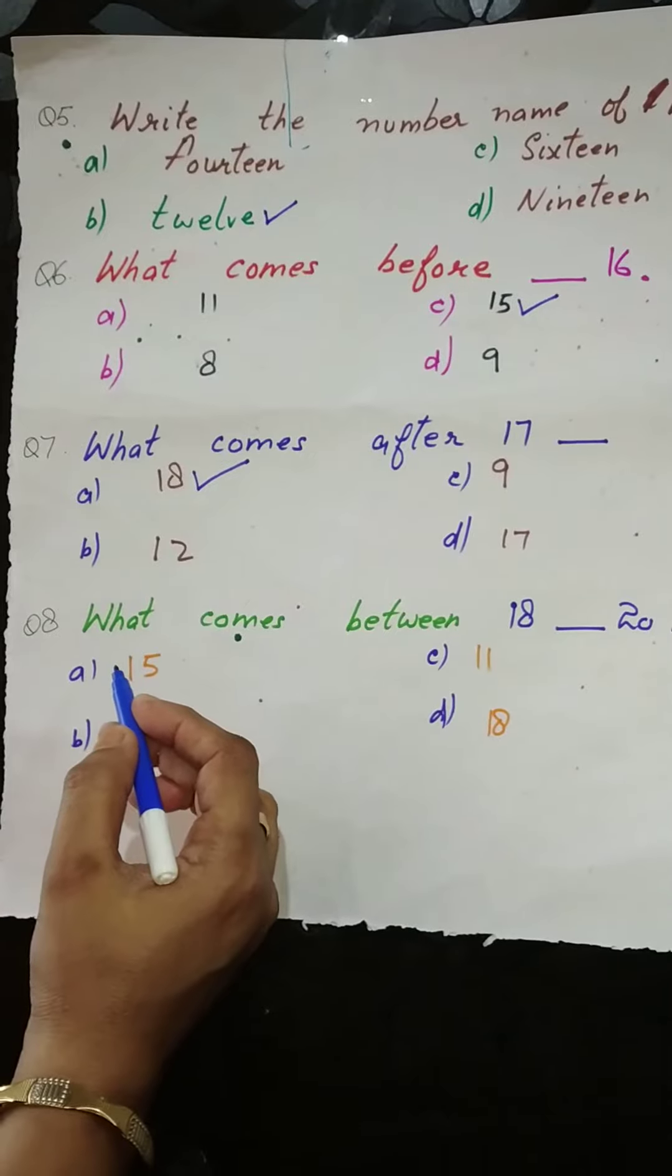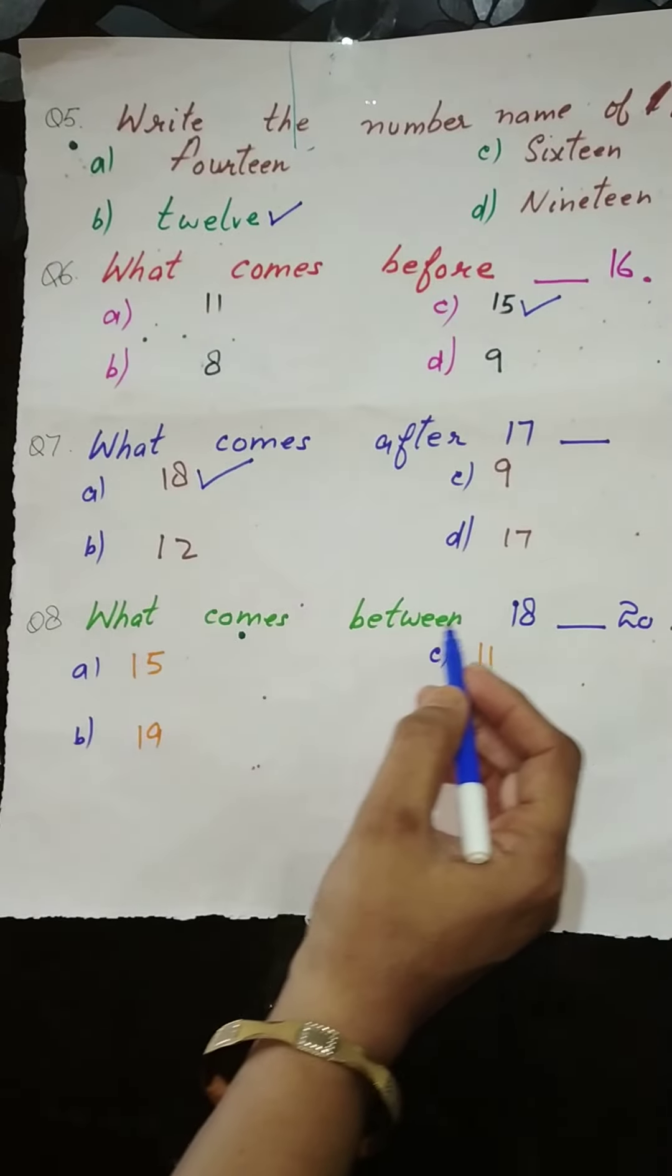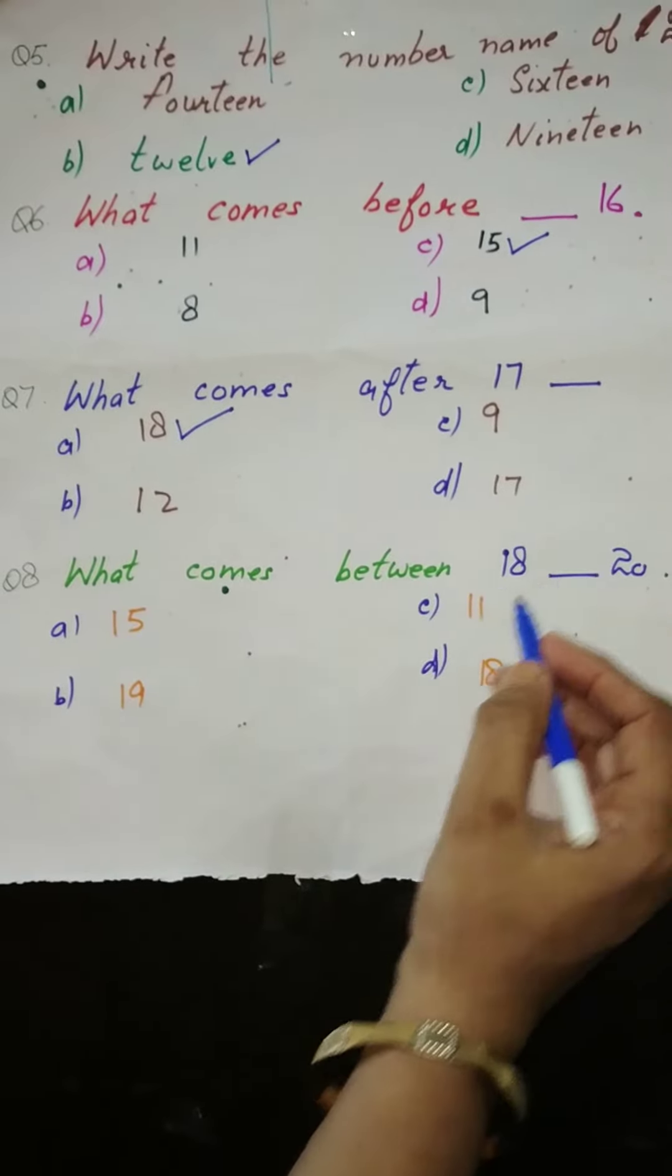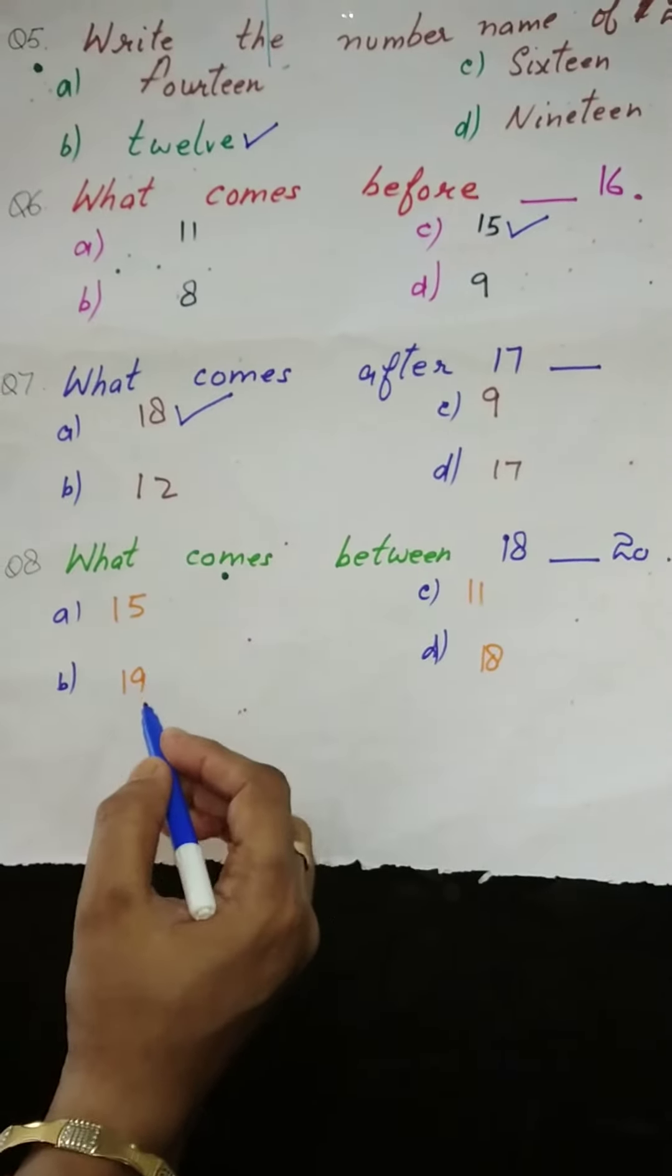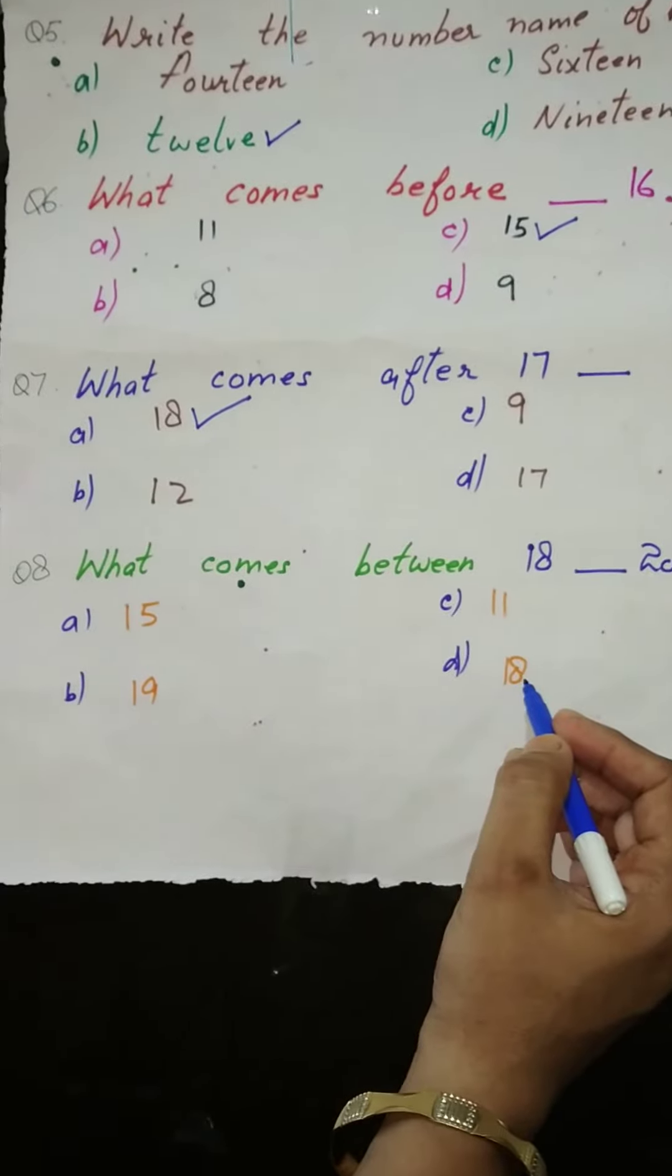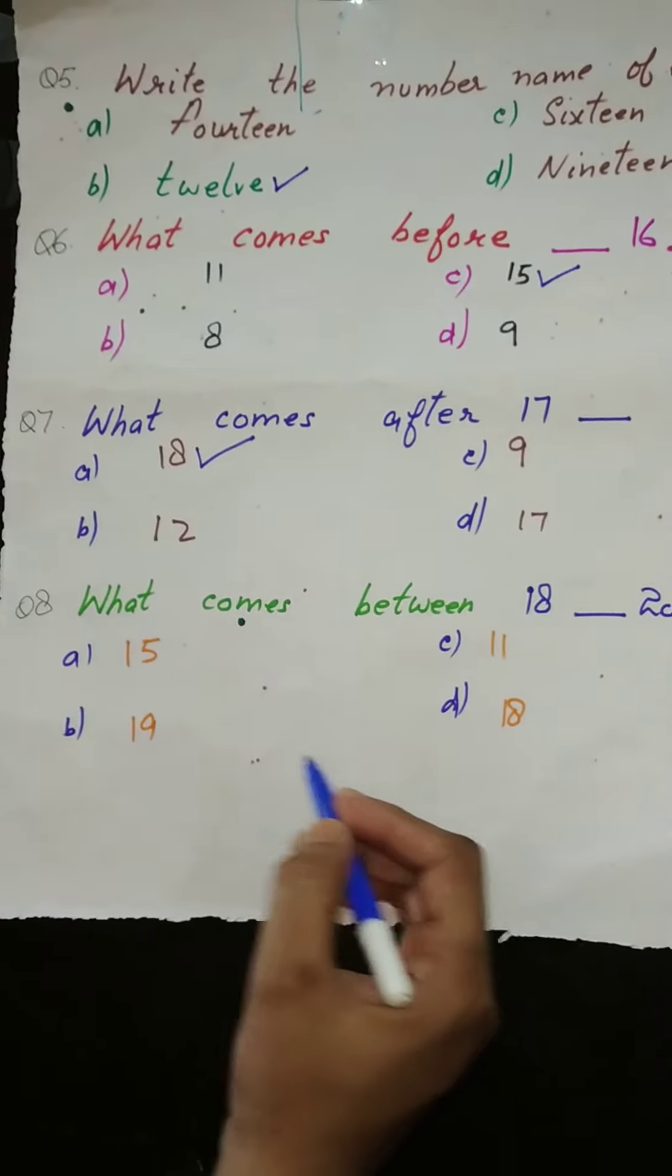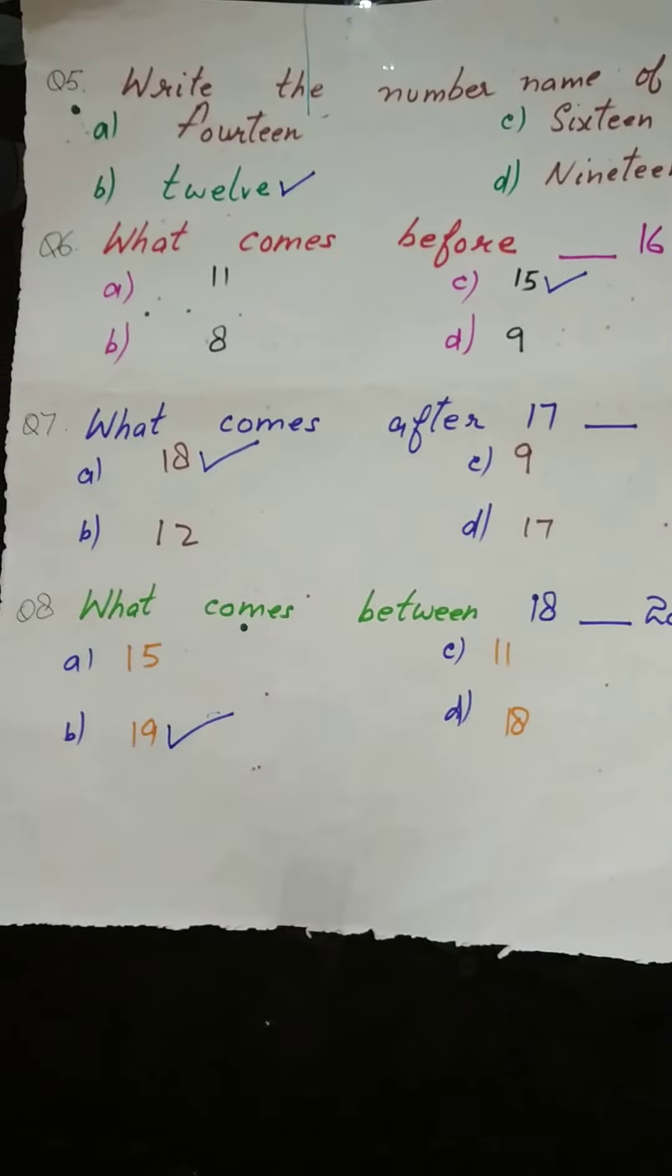Then next question we have: what comes between 18 and 20? Which is the right number that can be written here? See the options: 15, 19, 11, 18. Which is the right option? Yes, 19 is the right option.